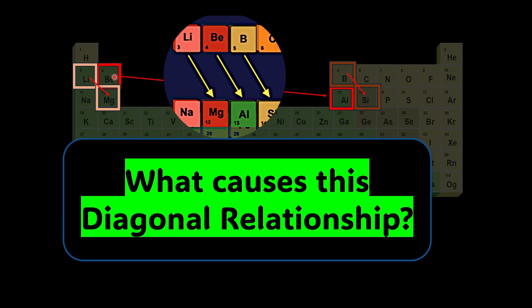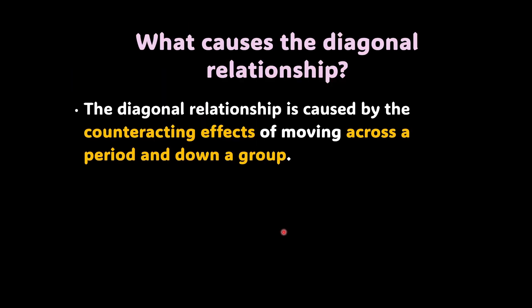Why not a vertical relationship or a horizontal relationship? Why a diagonal only? When we talk about the different trends, you will see that the diagonal relationship is caused by the counteracting effects of moving across a period and down a group.